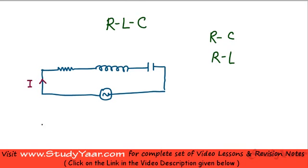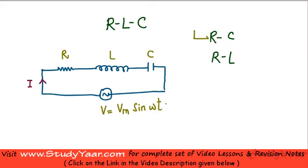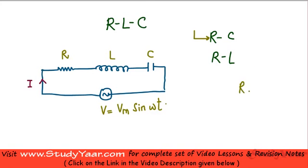The instantaneous current is assumed to be flowing in a particular direction. My voltage is equal to Vm sine omega t, with a resistance R, inductance L, and capacitance C. If you can analyze a RLC circuit, you can also understand a RC circuit — because an RC circuit is essentially a RLC circuit with L equal to zero. Similarly, a RL circuit is a RLC circuit with C equal to zero.